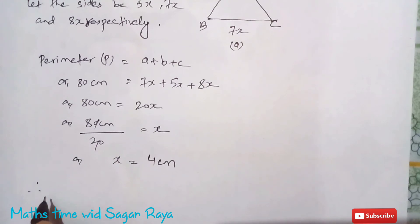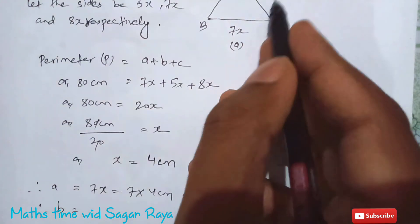Therefore now you can find all the sides. You can find a, so a equals to 7x, 7 into 4 cm equal to 28 cm. Similarly b equals to 5x, 5 into 4 cm equals to 20 cm.